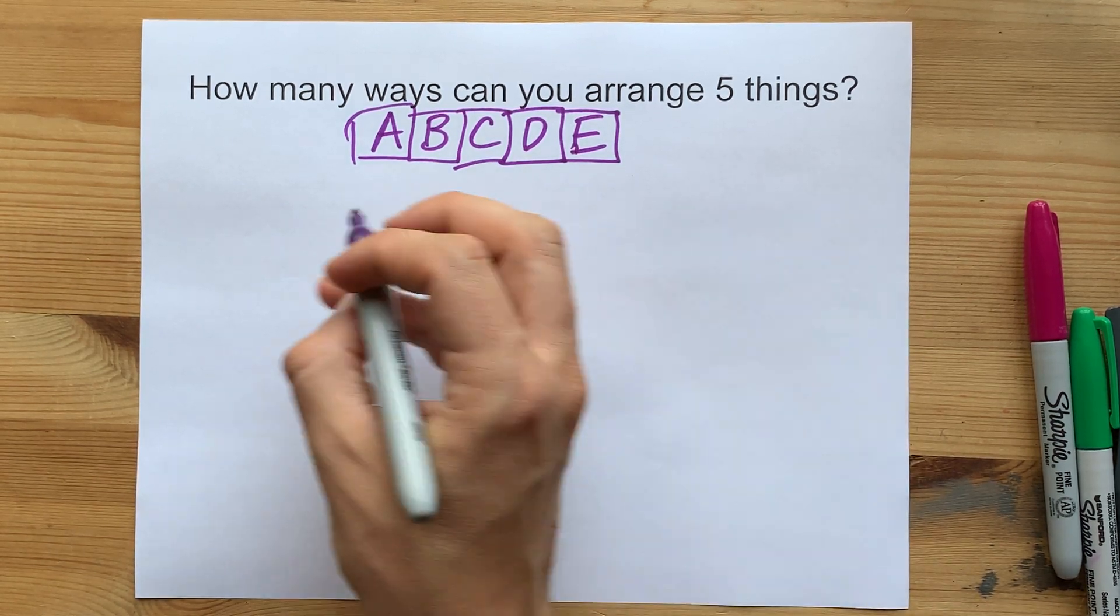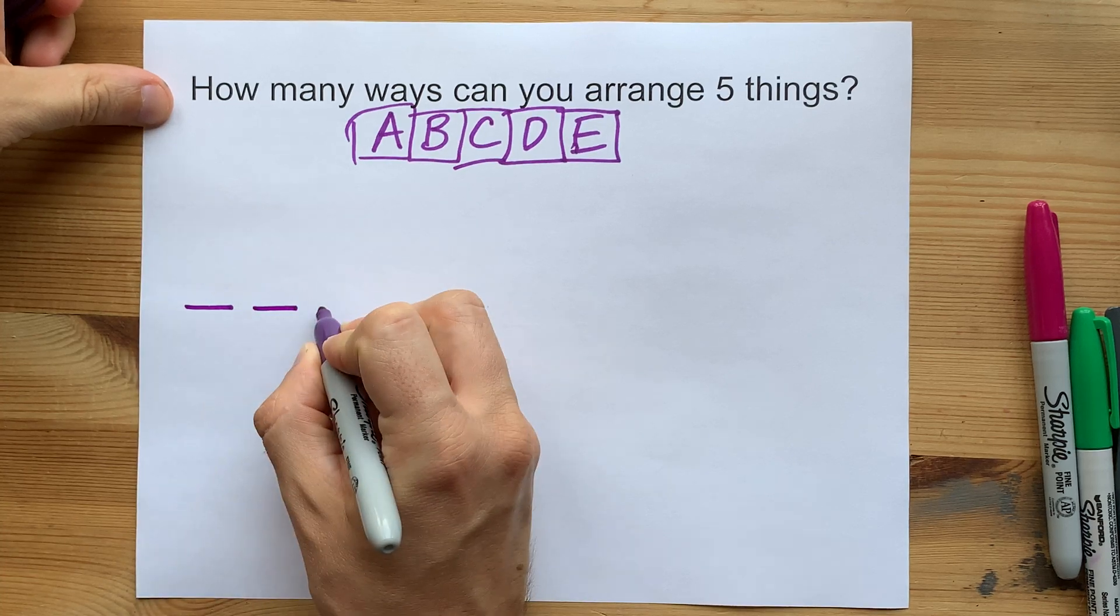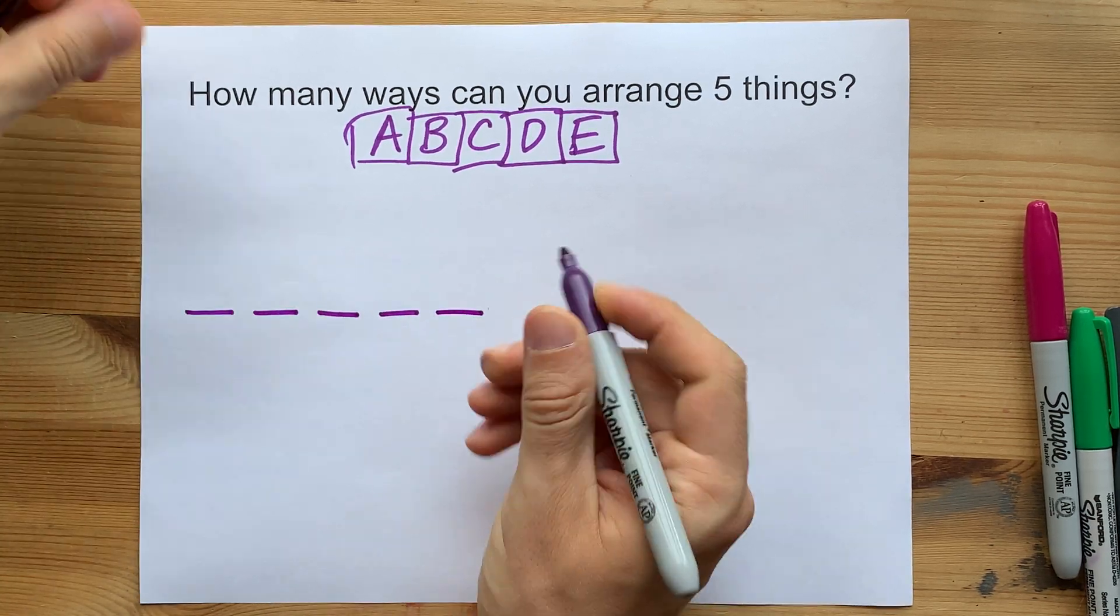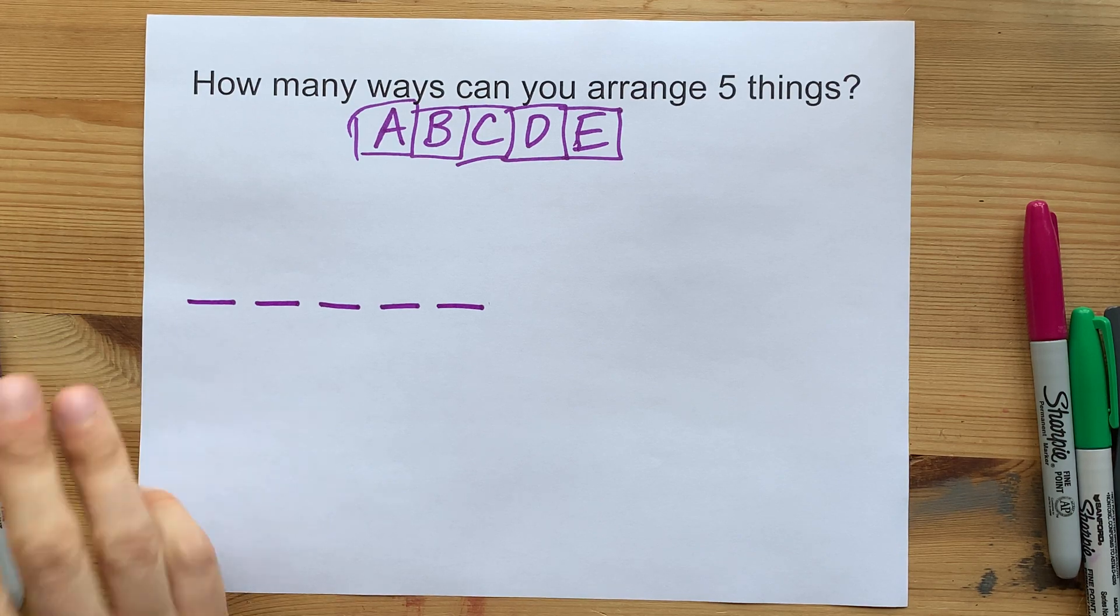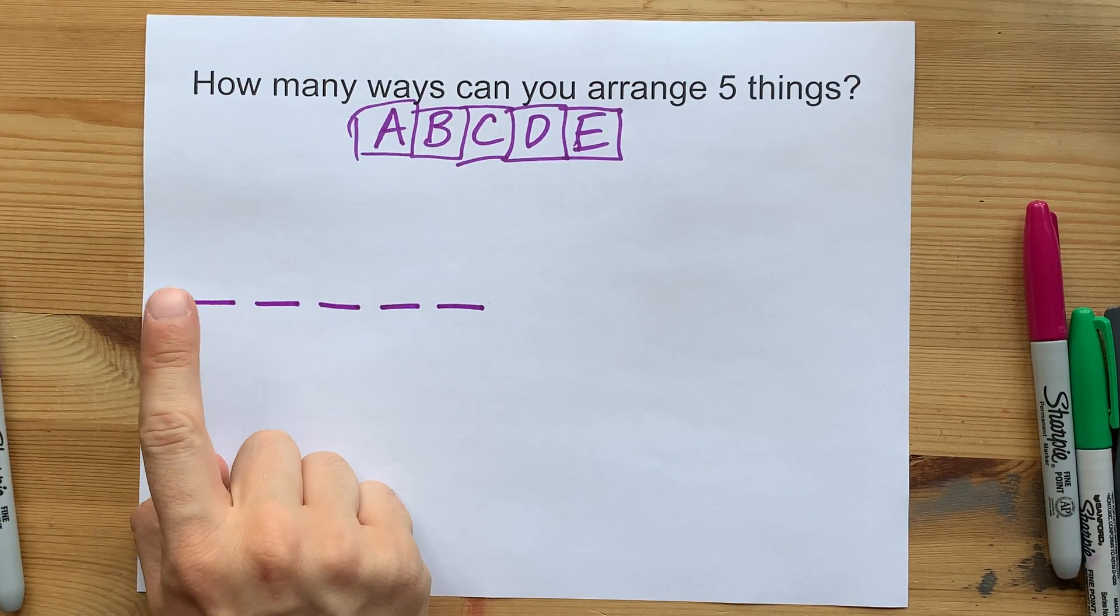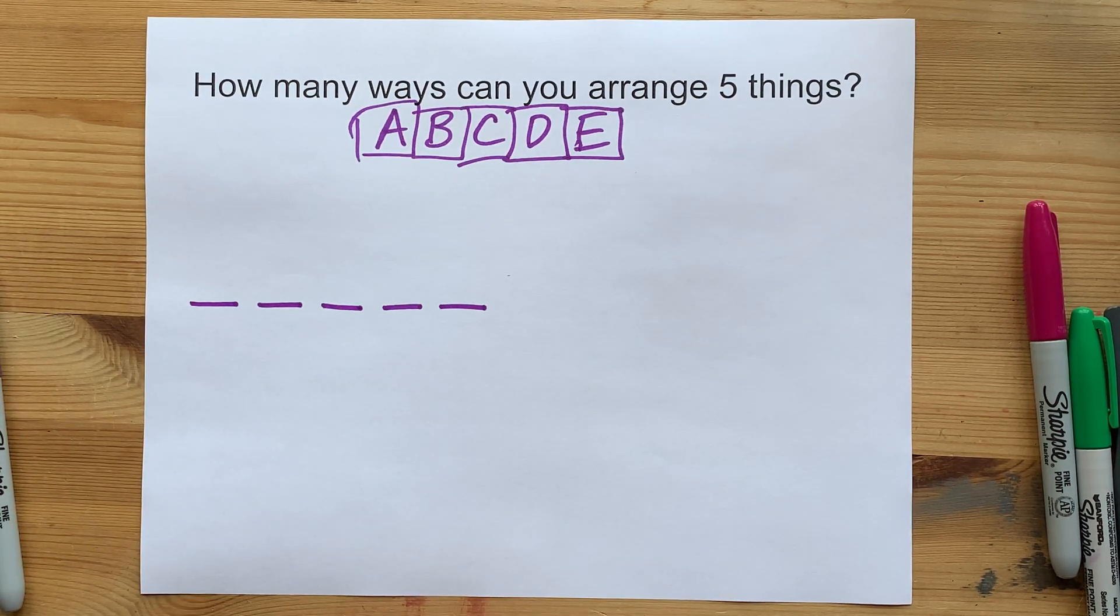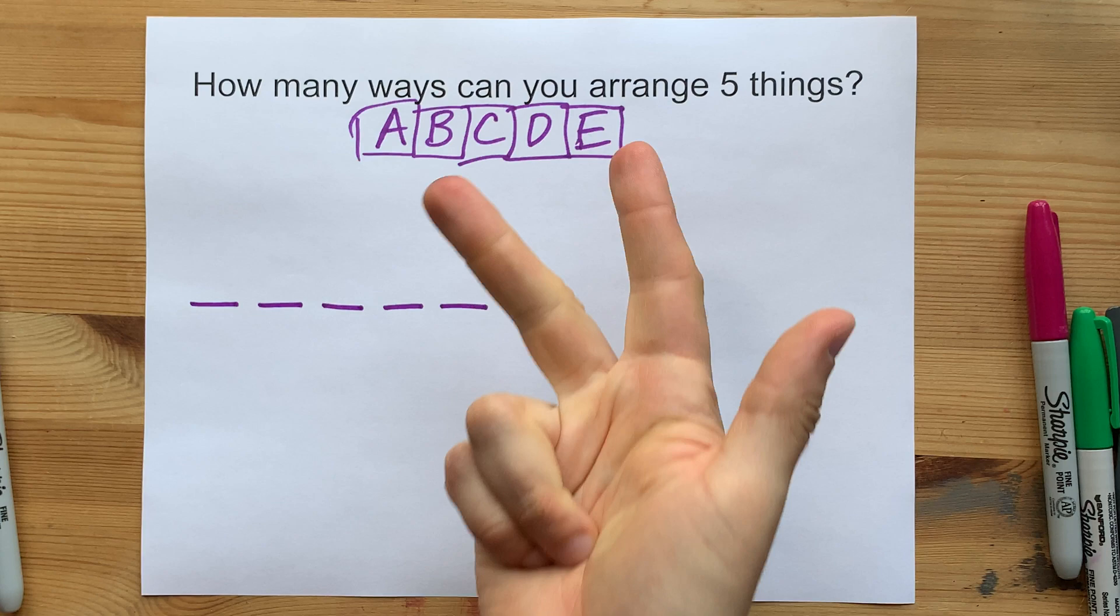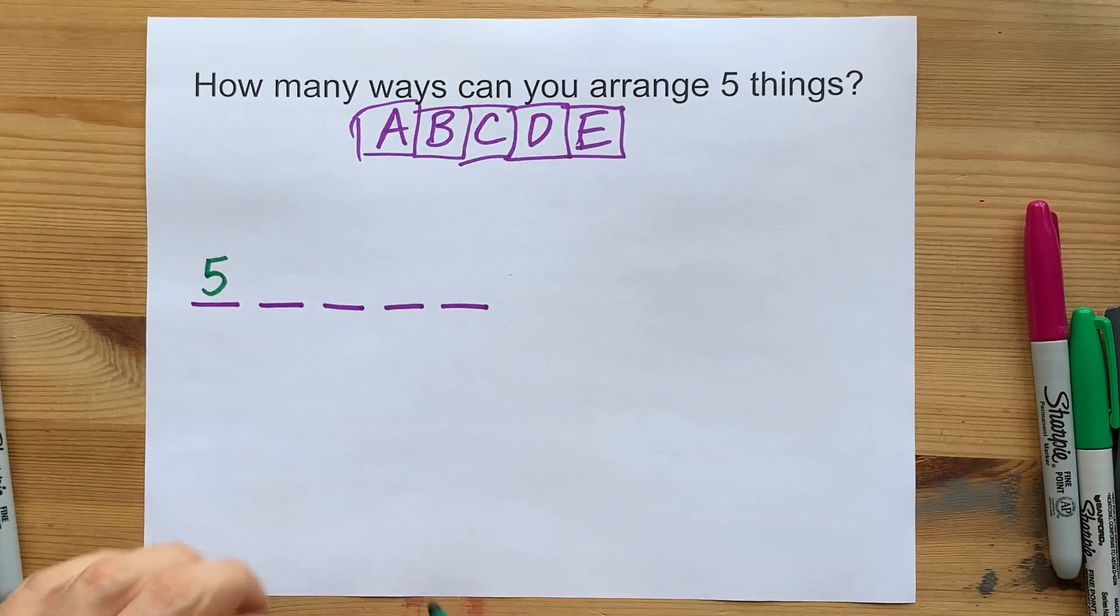So, the ways that I want you to be able to do it are to think about how many options you have for each of the five spaces that you can arrange things into. How many different options do you have for the very first slot when you're arranging these five things? Well, it could be A or B or C or D or E, so you have five options.